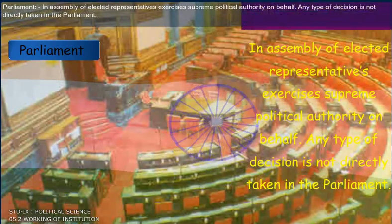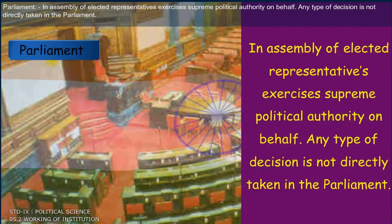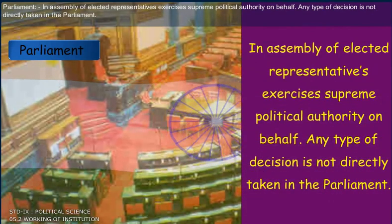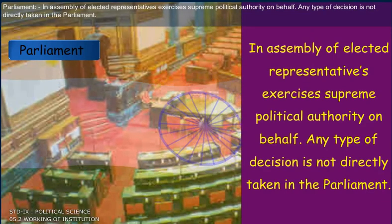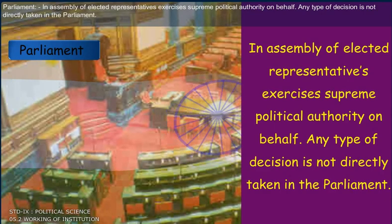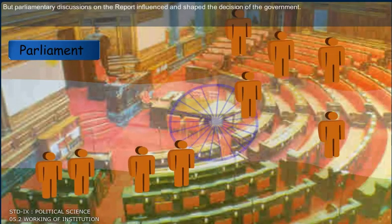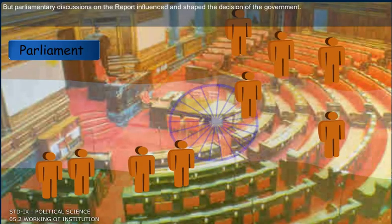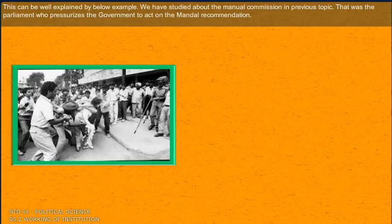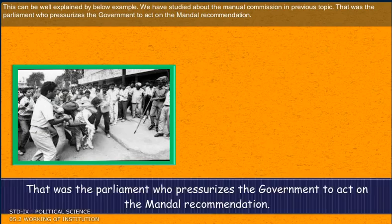Parliament is an assembly of elected representatives that exercises supreme political authority on behalf of the people. Any type of decision is not directly taken in the parliament, but parliamentary decisions and reports influence and shape the decisions of the government. For example, it was the parliament that pressurized the government to act on the Mandal Commission recommendations.